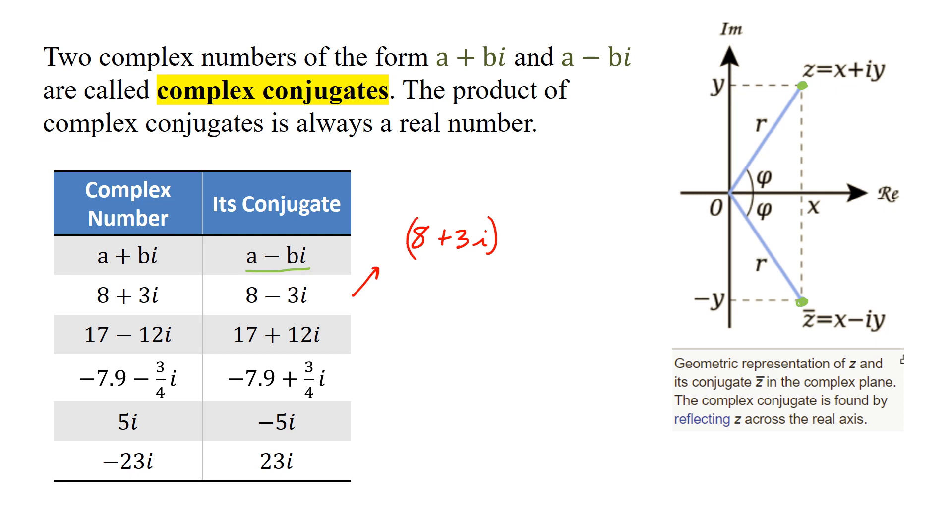This is very similar to a difference of squares pattern. Go ahead and distribute. So 8 times 8 is 64, 8 times negative 3i gives us negative 24i. Move inside, distribute the 3i. 3i times 8 is positive 24i minus 9i squared. You can see that negative 24i, positive 24i, they cancel out, they're 0. So I can bring down the 64 and the negative 9i squared.